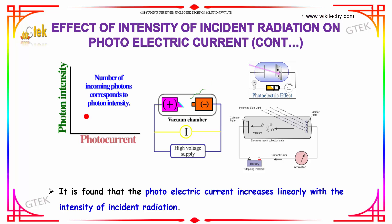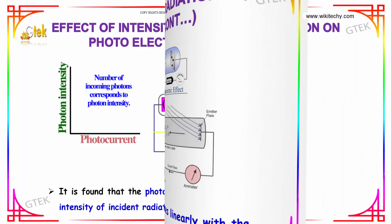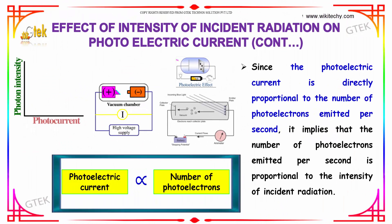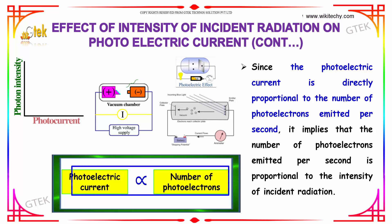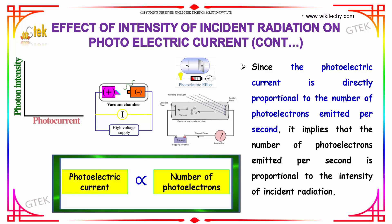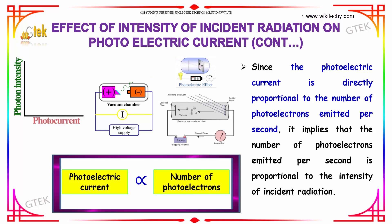The number of incoming photons corresponds to the photon intensity. Since the photoelectric current is directly proportional to the number of photoelectrons emitted per second, it implies that the number of photoelectrons emitted per second is proportional to the intensity of incident radiation.